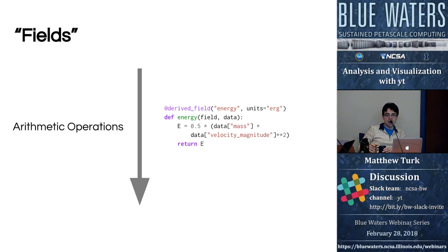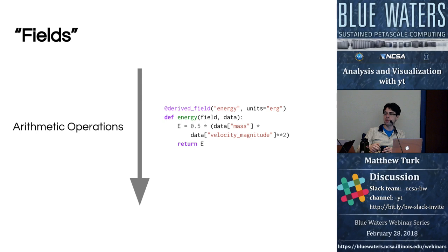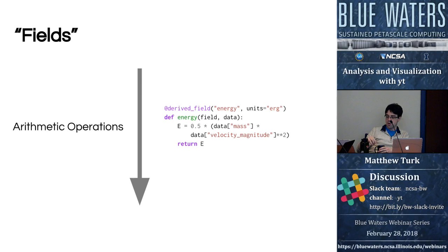YT lets you define arithmetic operations to represent fields. Here's what code in YT looks like to generate a derived field called energy. We have this decorator `@derived_field` — we specify the name and the units we want to come out of it. That serves two purposes: ensuring we have correctly defined our field (if the dimensions don't match what the function produces, it throws a scolding error), and converting units on output.